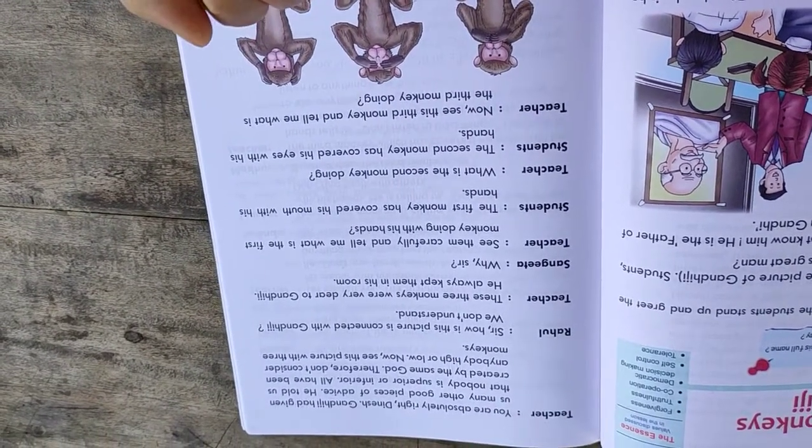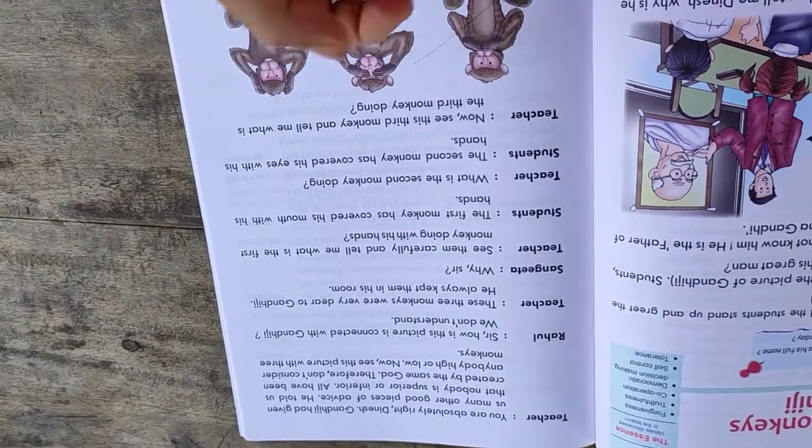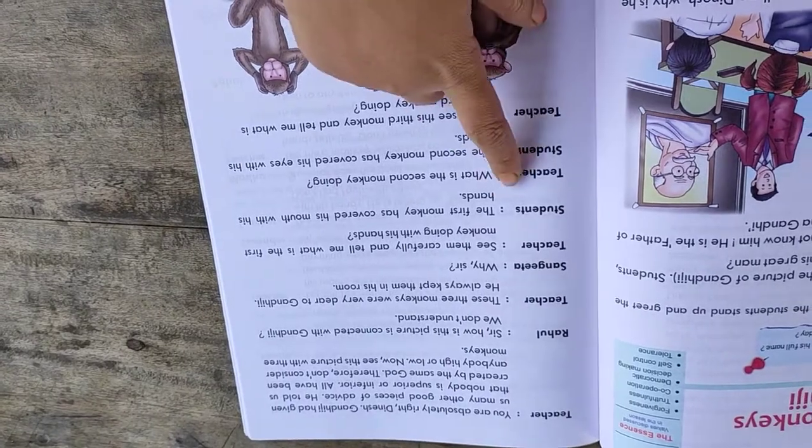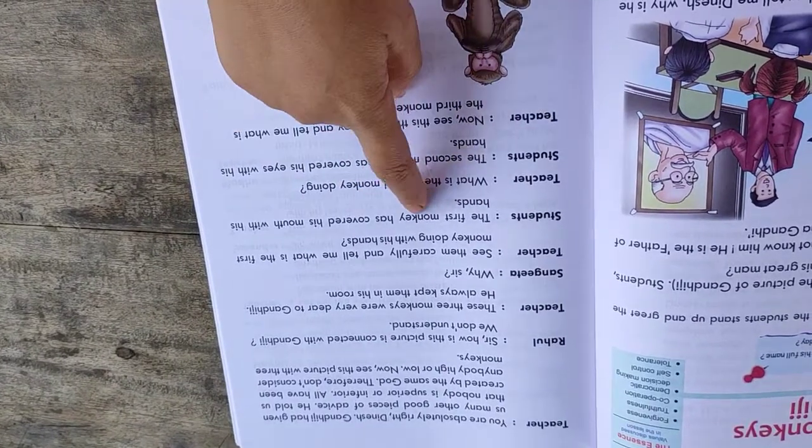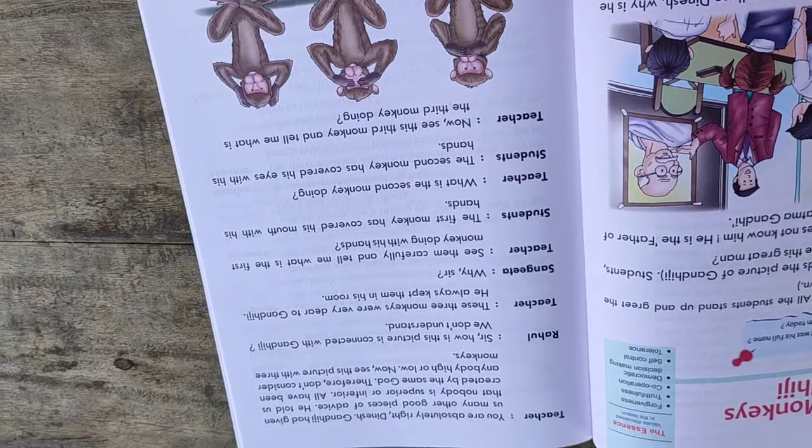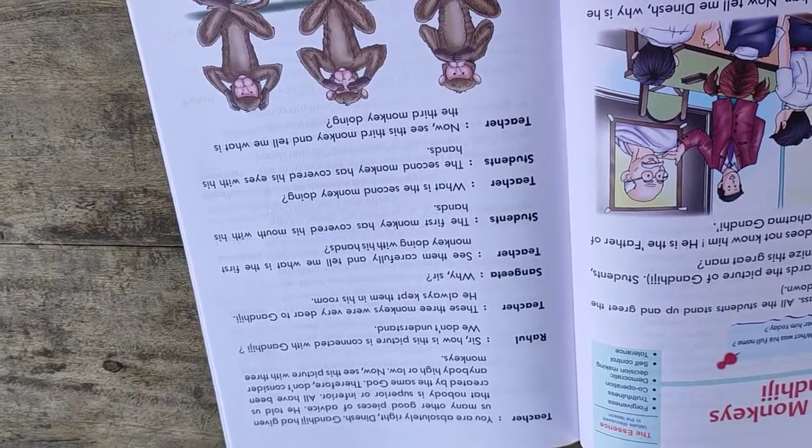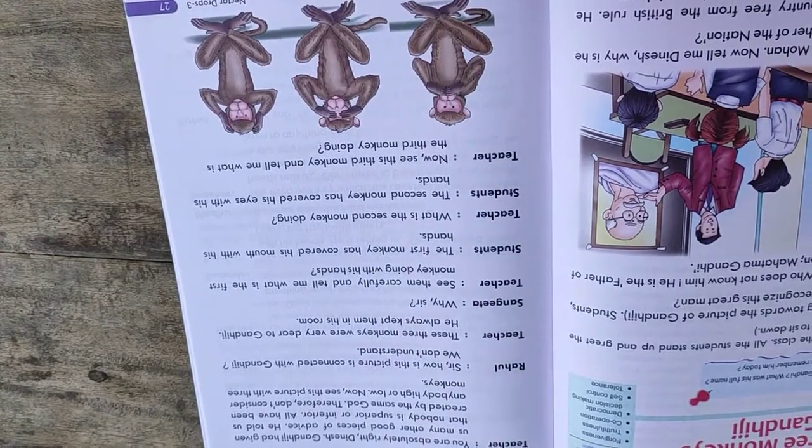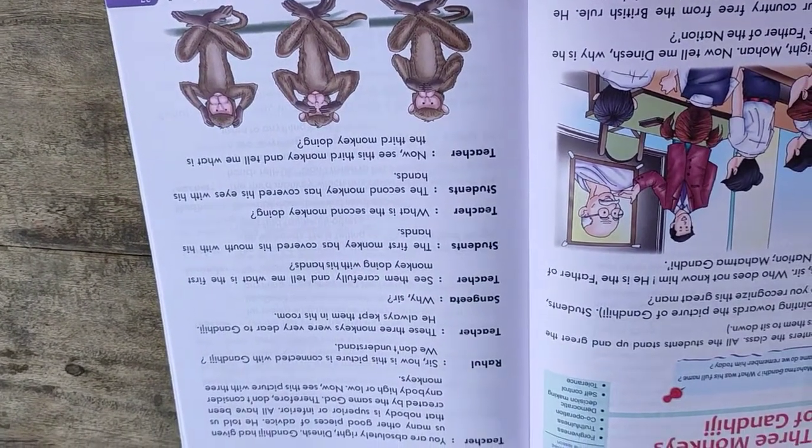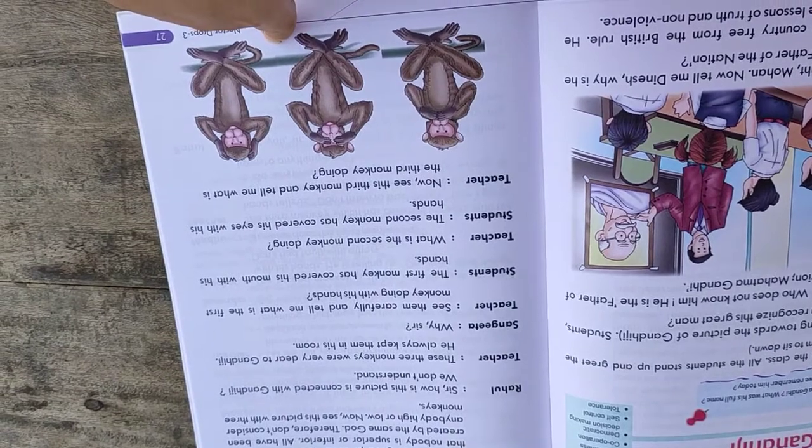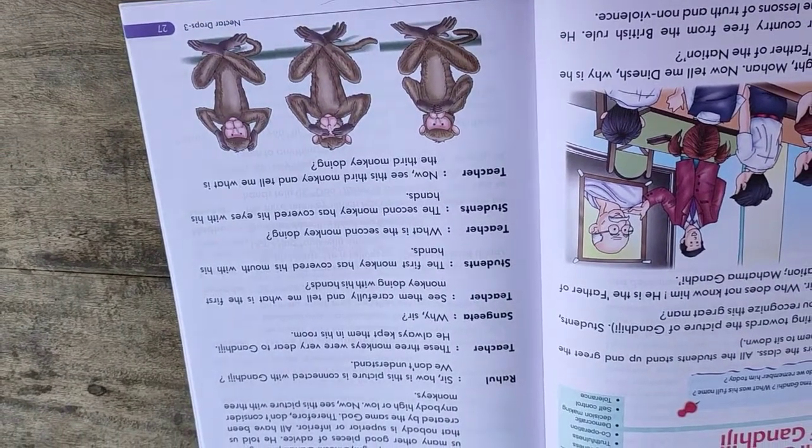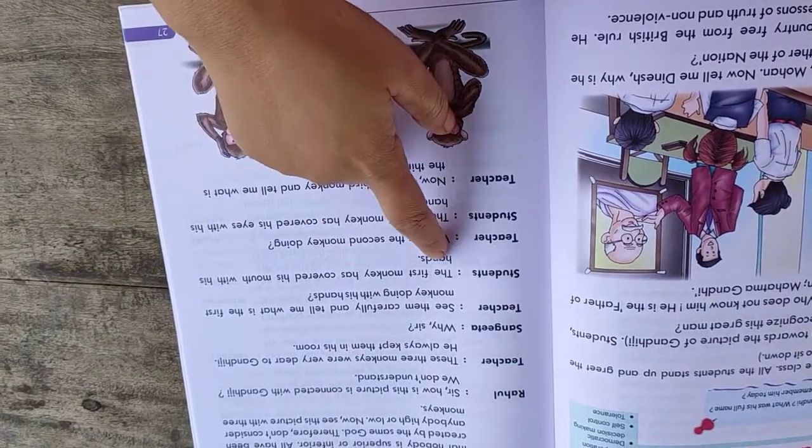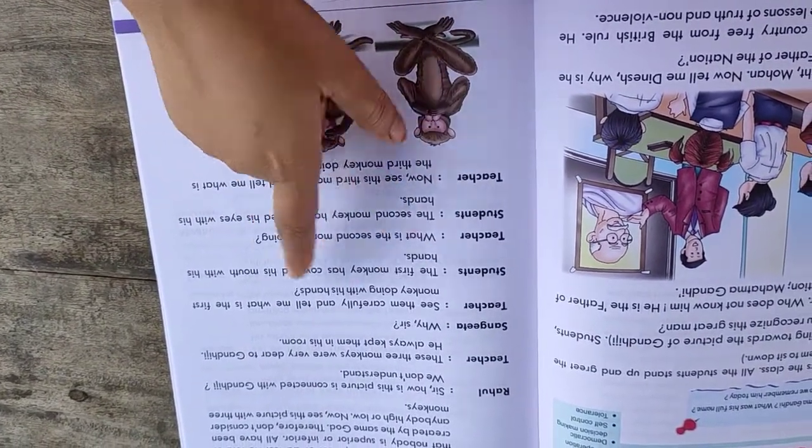Sangeeta asks, why sir? Teacher says, see them carefully and tell me what is the first monkey doing with his hands. Students respond, the first monkey has covered his mouth with his hands.